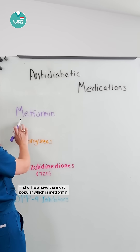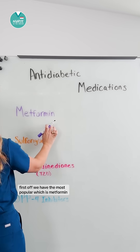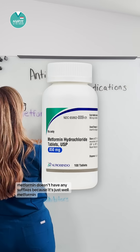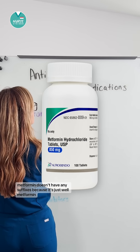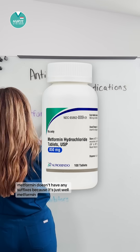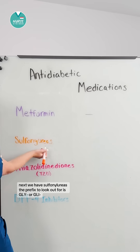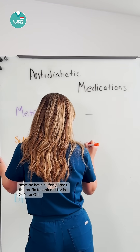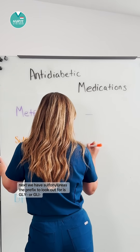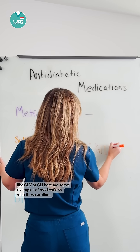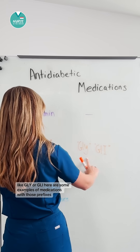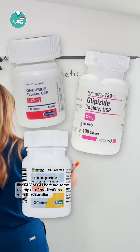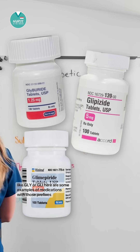First off, we have the most popular, which is metformin. Metformin doesn't have any suffixes — it's just metformin. Next, we have sulfonylureas. The prefix to look out for is 'gli', like G-L-Y or G-L-I. Here are some examples of medications with those prefixes.